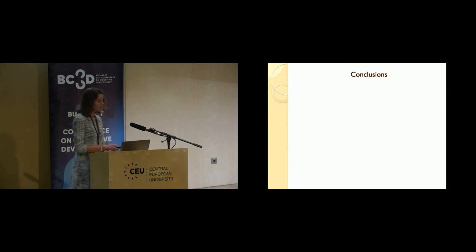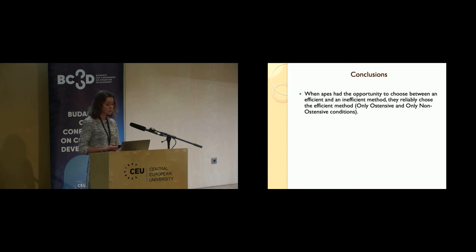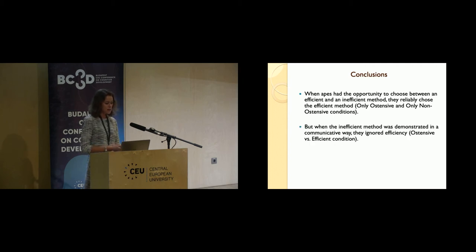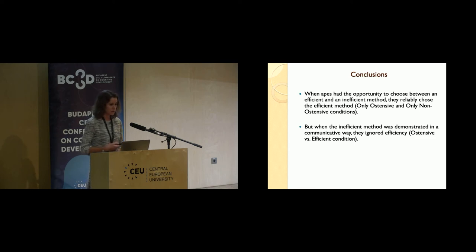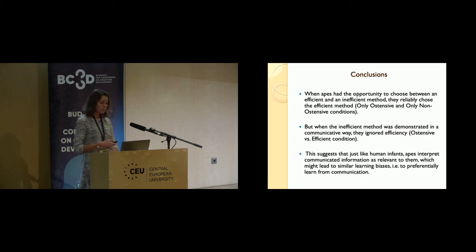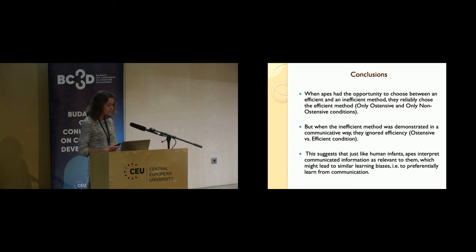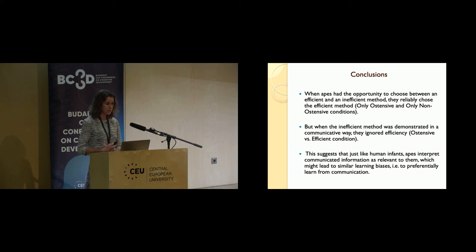In conclusion, when apes had the opportunity to choose between an efficient and an inefficient method, they reliably chose the efficient method in both the only-ostensive and only-non-ostensive conditions. But when the inefficient method was demonstrated communicatively, they ignored efficiency and chose equally often both methods. It seems that, just like human infants, apes tend to interpret communicated information as relevant to them—which raises an open question about whether similar learning biases exist in apes, perhaps preferring to learn from communication over other information sources.